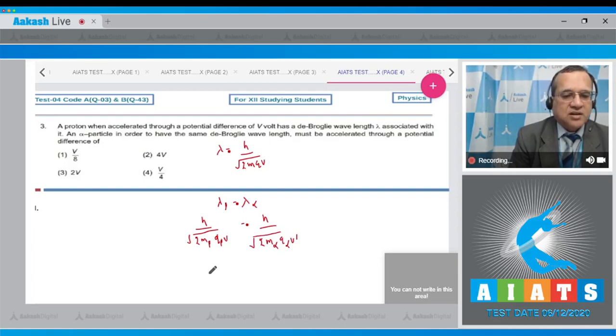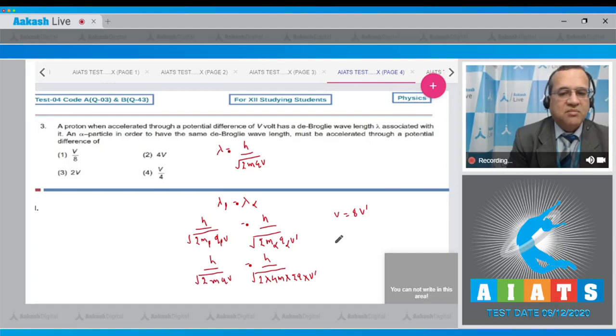Now if you're equating, you get H divided by square root of 2 times mass of proton times charge times potential should equal H divided by square root of 2 times mass of alpha particle is 4M, and the charge is 2Q, and potential is V dash. If you equate, you get V equals 8 times V prime. Therefore V prime should equal V by 8. The answer to this question is the first option, so answer is 1.